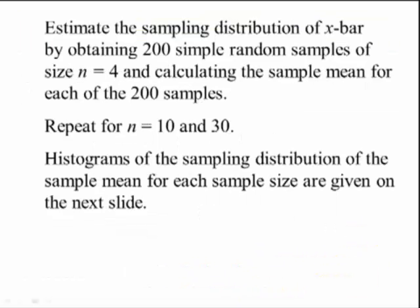We estimate the sampling distribution of X-bar by obtaining 200 simple random samples of size 4 and calculating the sample means for each of the 200 samples. We then repeat for sample sizes n equals 10 and 30. Histograms of the sampling distribution of the sample means for each sample size are given on the next slide.